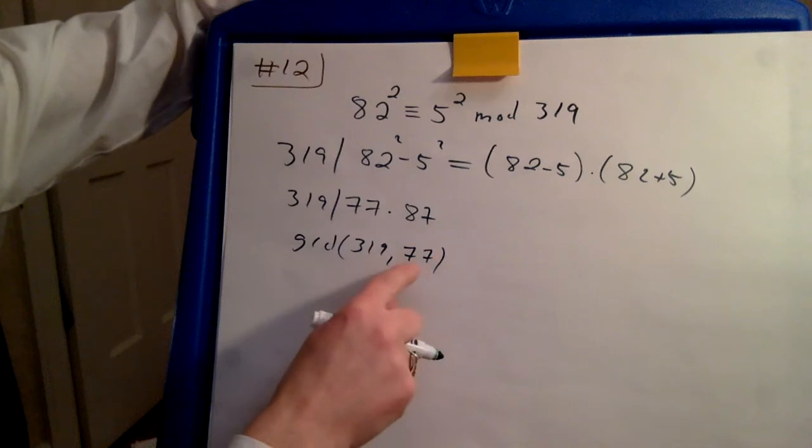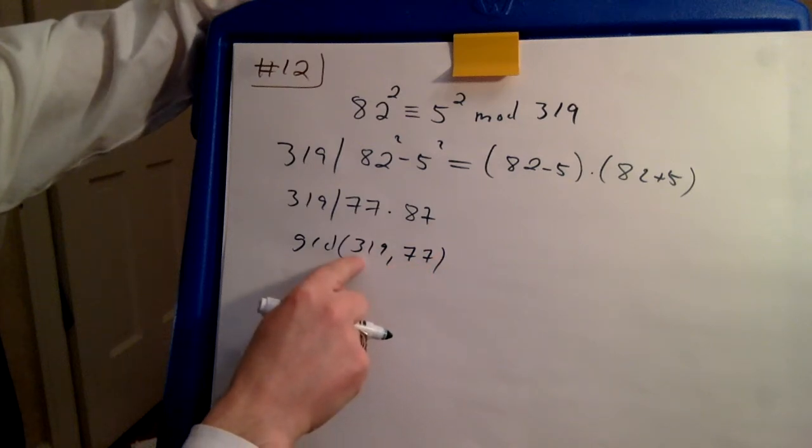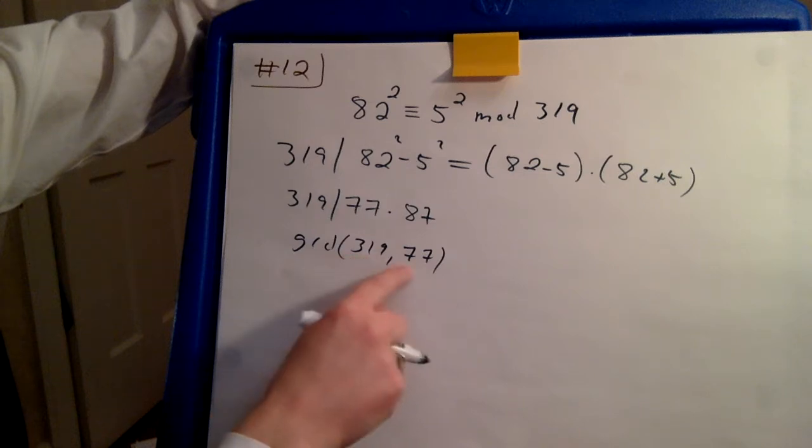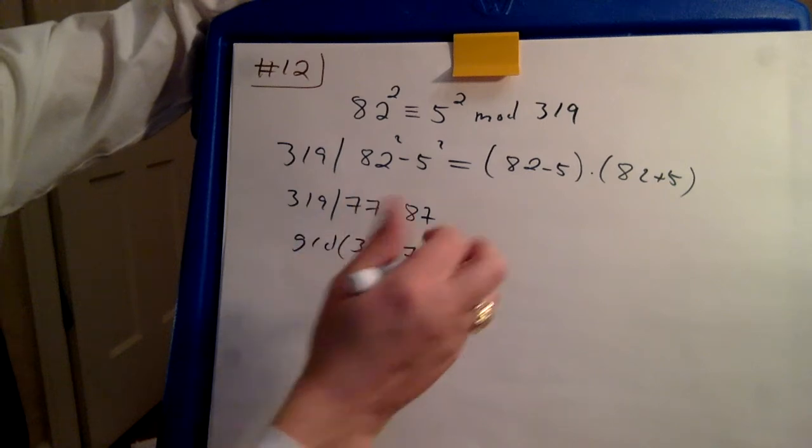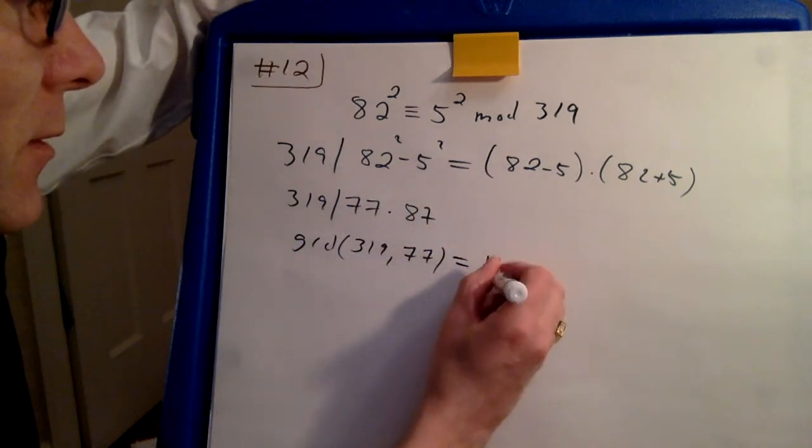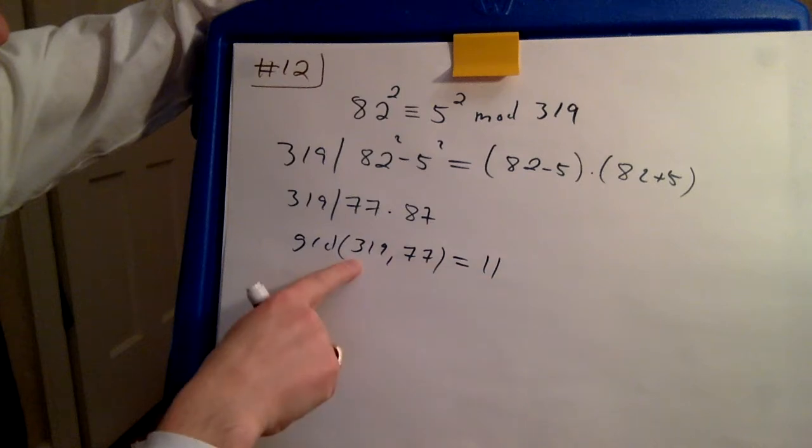77 you can now see easily has factor 7 in it. You can locate the number 7 in here. The other factor is 11, and you see that 3 plus 9 minus 1 is 11. So 11 is a factor of 319.